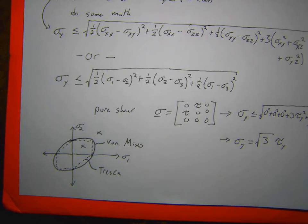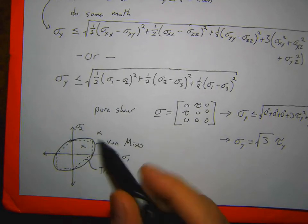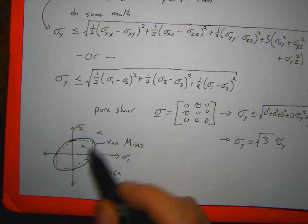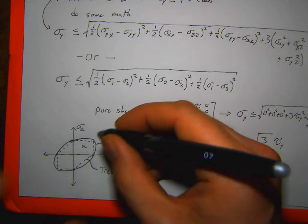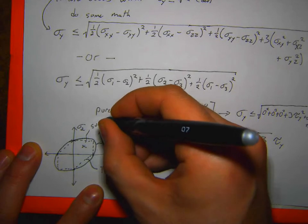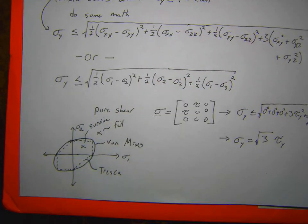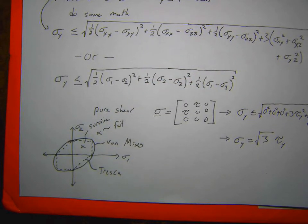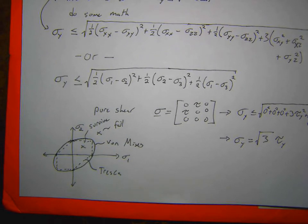Tomorrow we'll go through some examples on some of this. To clarify: failure occurs when I'm outside that yield surface, so outside is failure and inside is survival. Tomorrow we'll go through a couple of examples of how you would use this in practice for a couple of simple cases of loading.